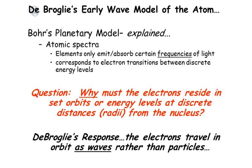So the question really is: why must the electrons reside in set orbits or energy levels at discrete distances from the nucleus? Why can't they just have any distance? Why do they have to have certain energy levels? De Broglie's response was the electrons travel in orbit as a wave rather than a particle.